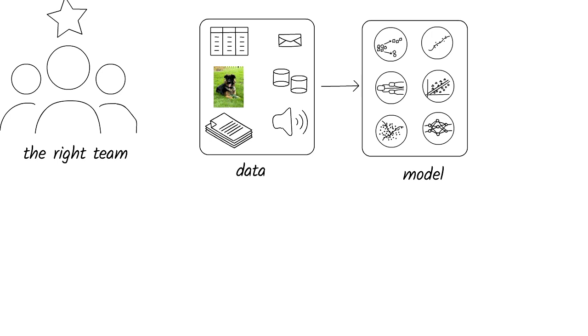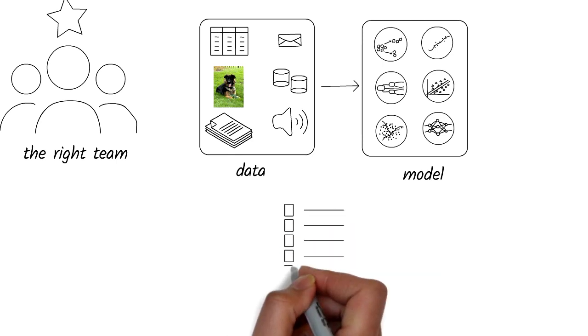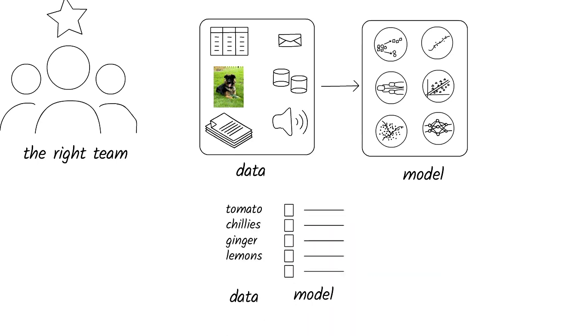Let's look at some examples of data and models that are easier to understand. A list is a model. I can use a list to populate it with grocery items that I need to buy from the store. The data in this case are the items themselves. I can use the same model, the list, to populate it with my to-do items. The structure of the model remains the same, but the content changes based on different problems I'm trying to solve.